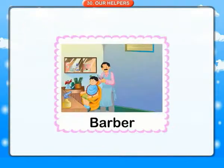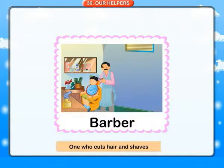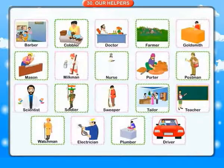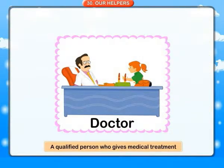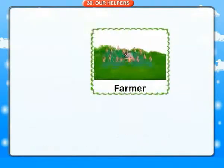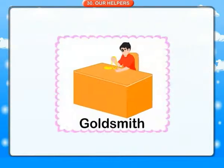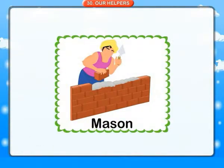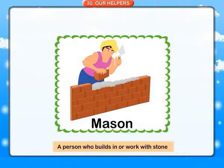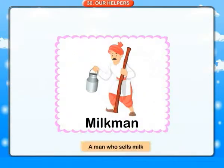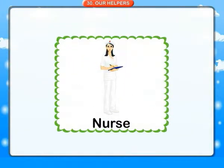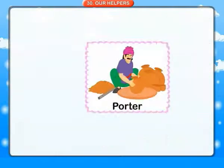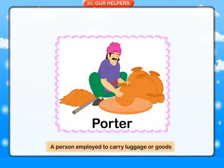Our helpers. Barber: who cuts our hair and shapes it. Cobbler: a mender of boots and shoes. Doctor: a qualified person who gives medical treatment. Farmer: a land cultivator. Goldsmith: one who makes articles of gold. Mason: a person who builds in or works with stone. Milkman: a man who sells milk. Nurse: a female trained to look after sick or injured people.